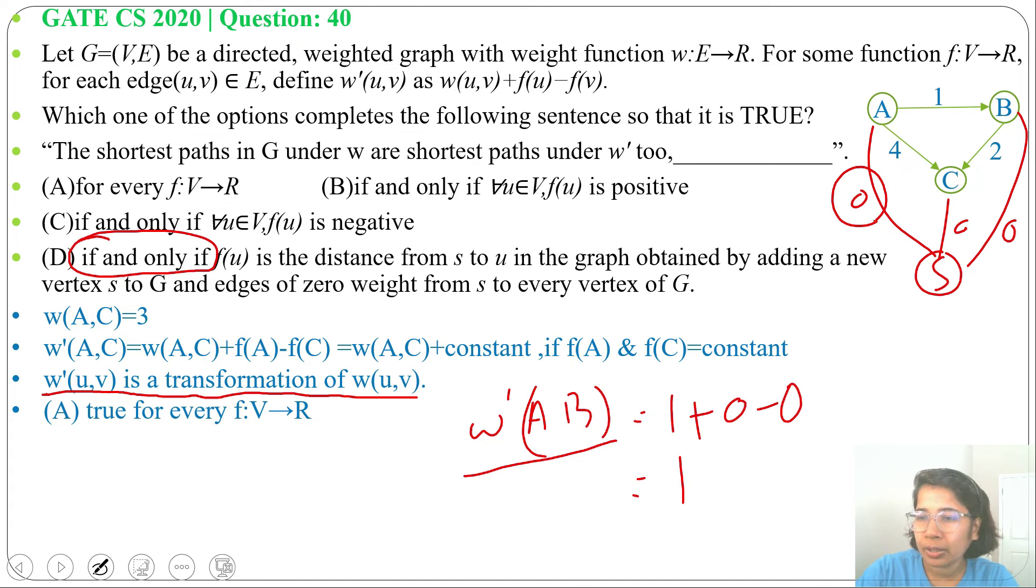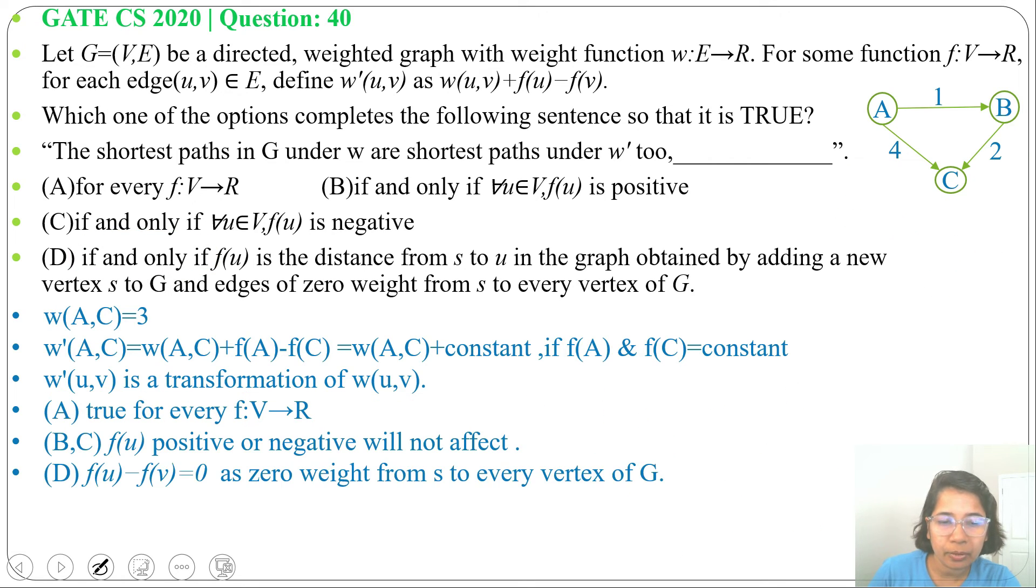Suppose all weight costs will take 2, then also it will be true. Like W'(A,B), 1 plus 2 minus 2, so this will be 0. It will be again 1, it will be again same as W(A,B).